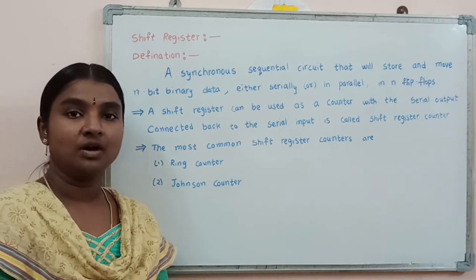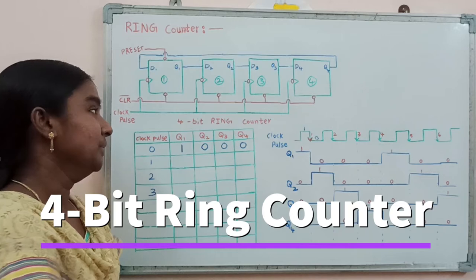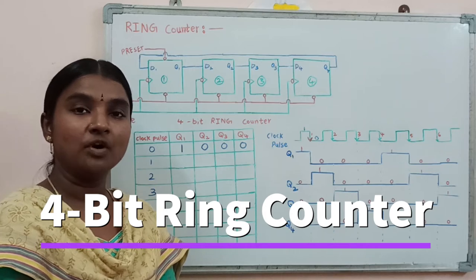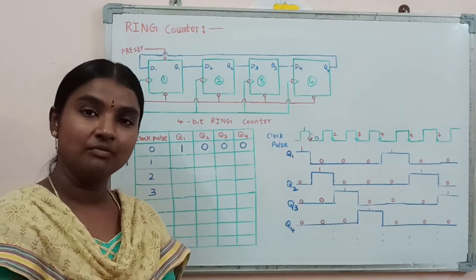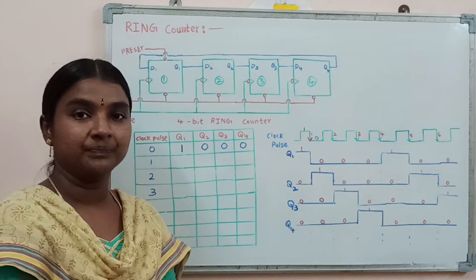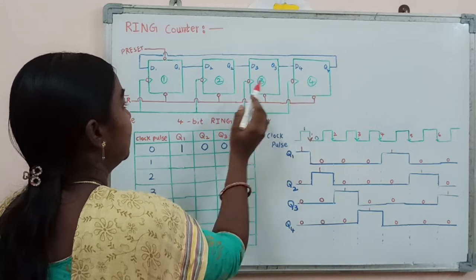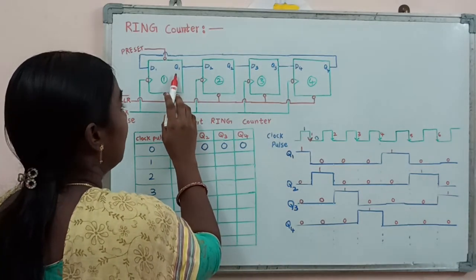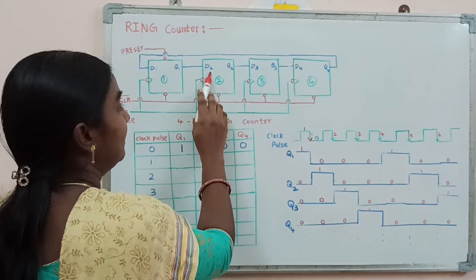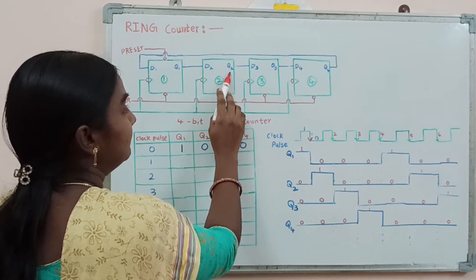In this video you will learn about ring counter. Now we will consider the working operation of a 4-bit ring counter. Since we are using four binary bits, we need four flip flops. In this circuit we are going to use D-type flip flops. In the logic diagram, these four D-type flip flops are connected with each other — the output of the first flip flop connects to the input of the second, and the third flip flop input is connected with the output of the second flip flop.